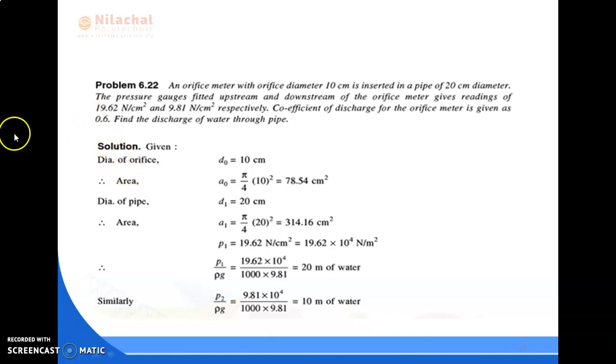Here we have to find out the discharge. Let's see what is given. Diameter of orifice D₀ = 10 cm, so from that we calculate A₀ = π/4 × D₀² = 78.54 cm².